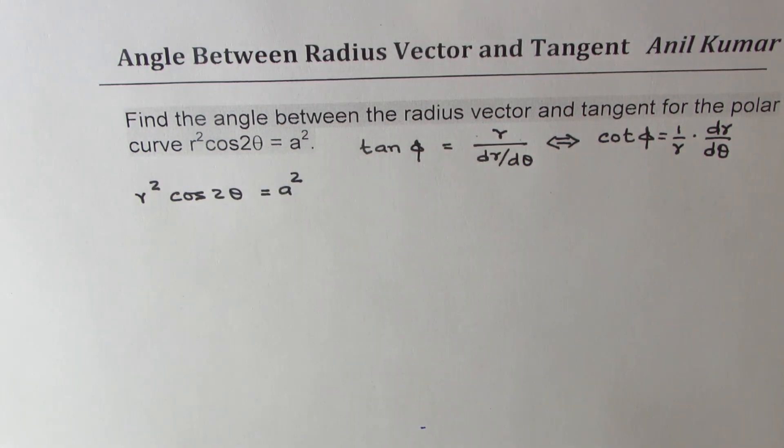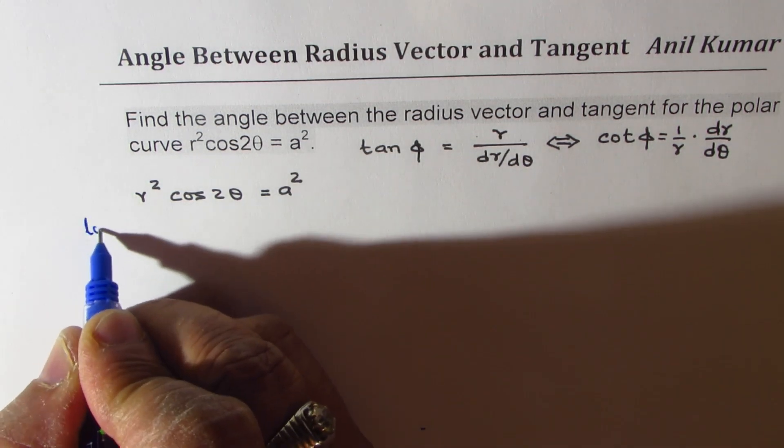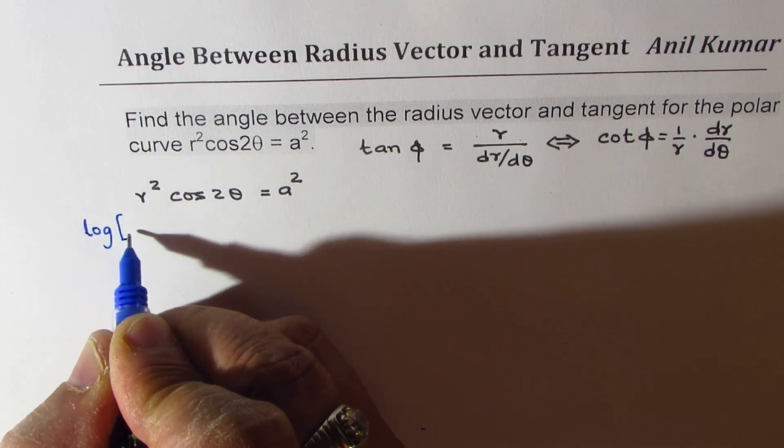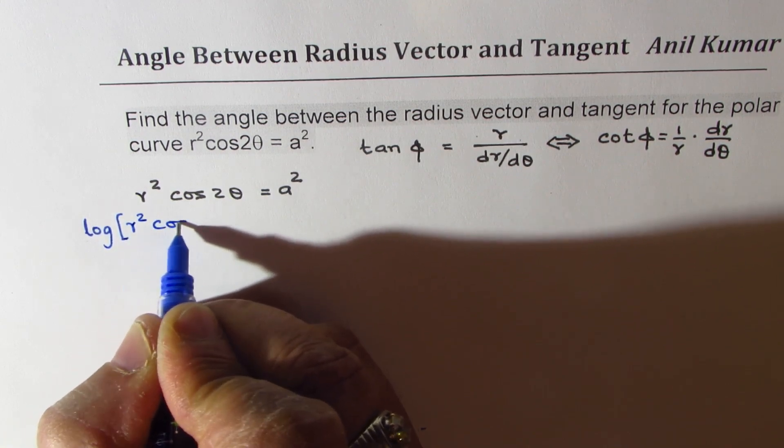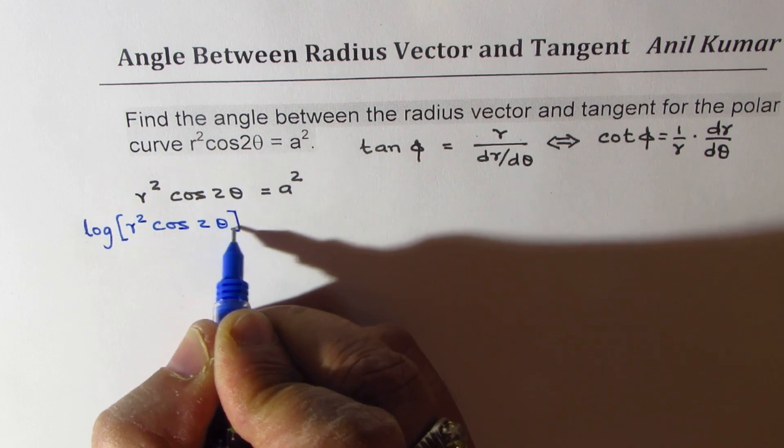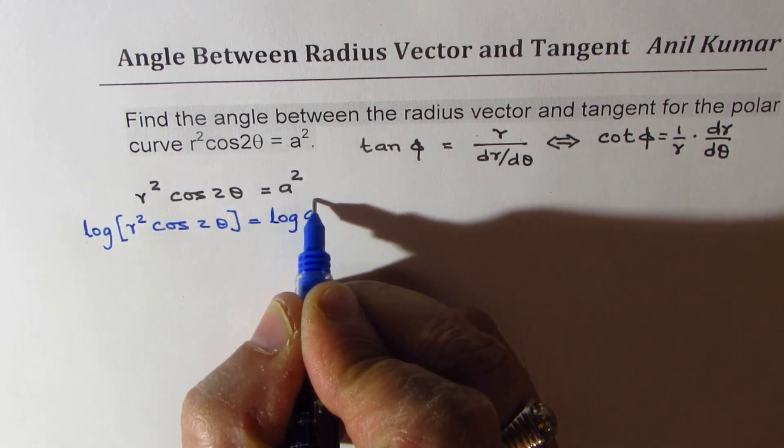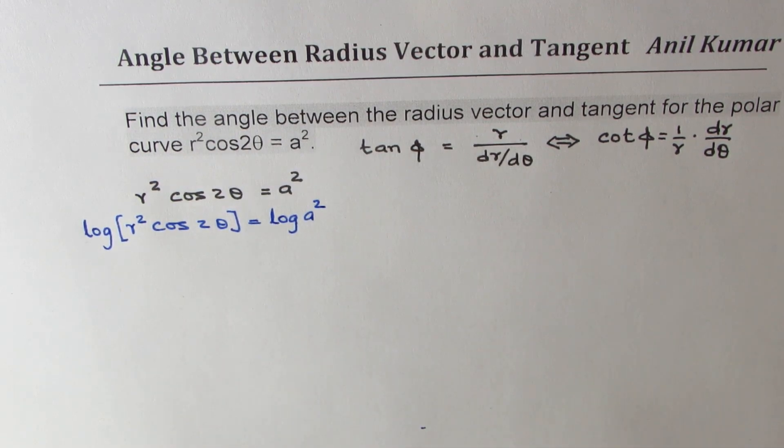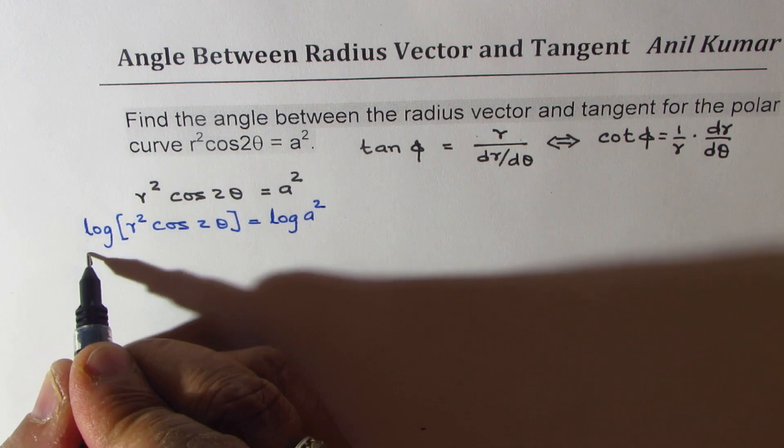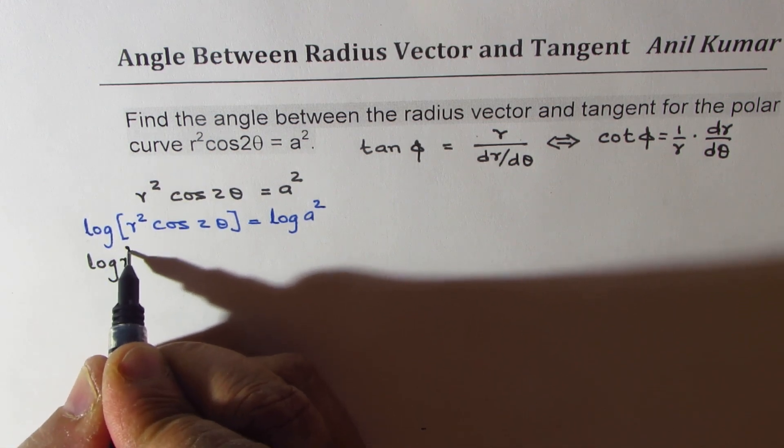To find the derivative dr/dθ what should we do is better to take log both sides. So we'll take log and simplify our exercise. We get log of this equal to log of a². Now let's expand. So we get log of r².